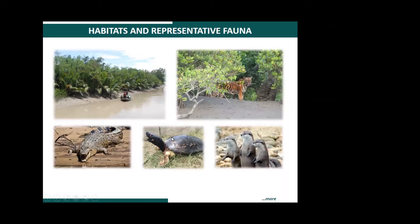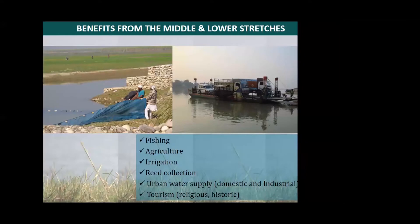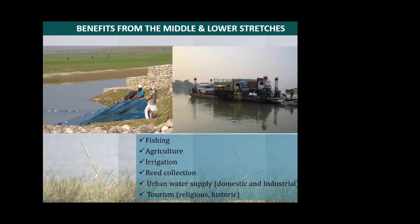We also have the small-clawed otter here. The middle and lower Ganga have similar geomorphology, so the services or benefits derived from both stretches are similar — including fishing, agriculture, reed collection, and water supply. Tourism is also important here because Varanasi and other major religiously important cities are located along this stretch. Transportation is another key benefit; the Ganga river from Haldia to Allahabad is the first national waterway of India and is being promoted for ferrying larger ships.